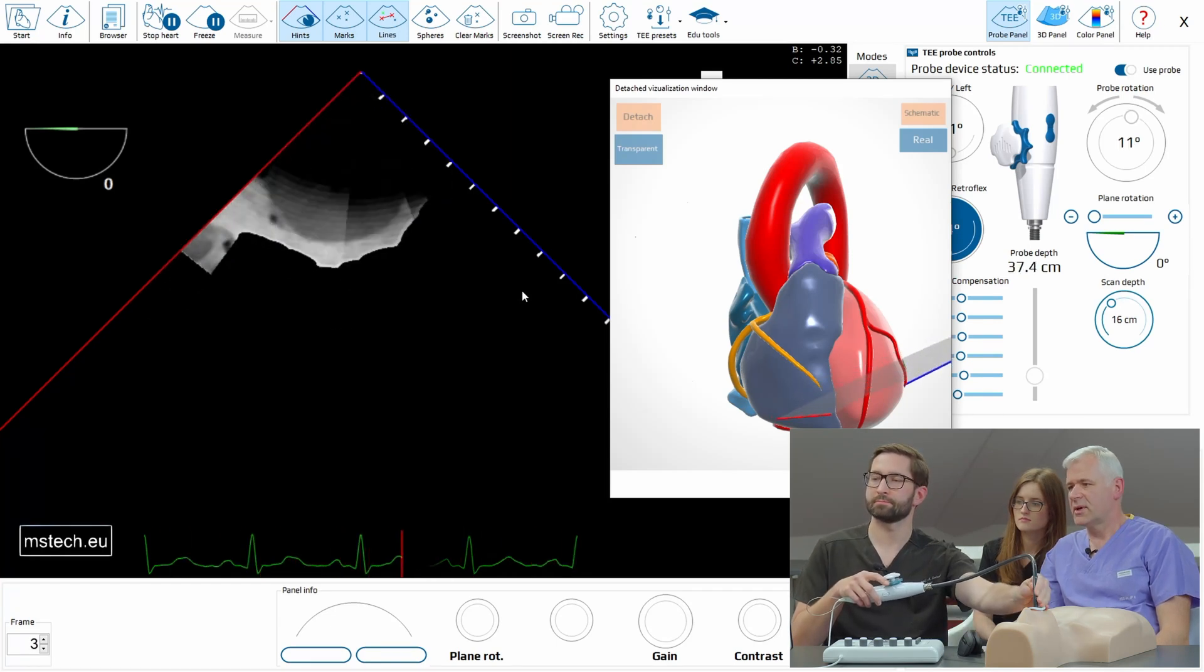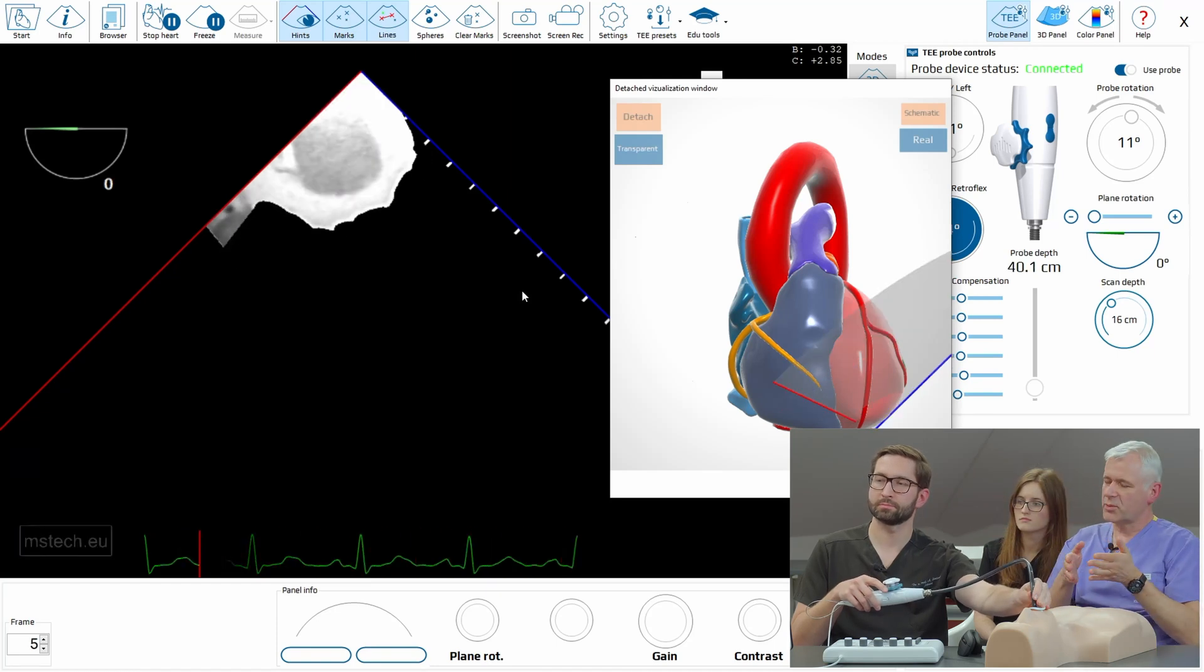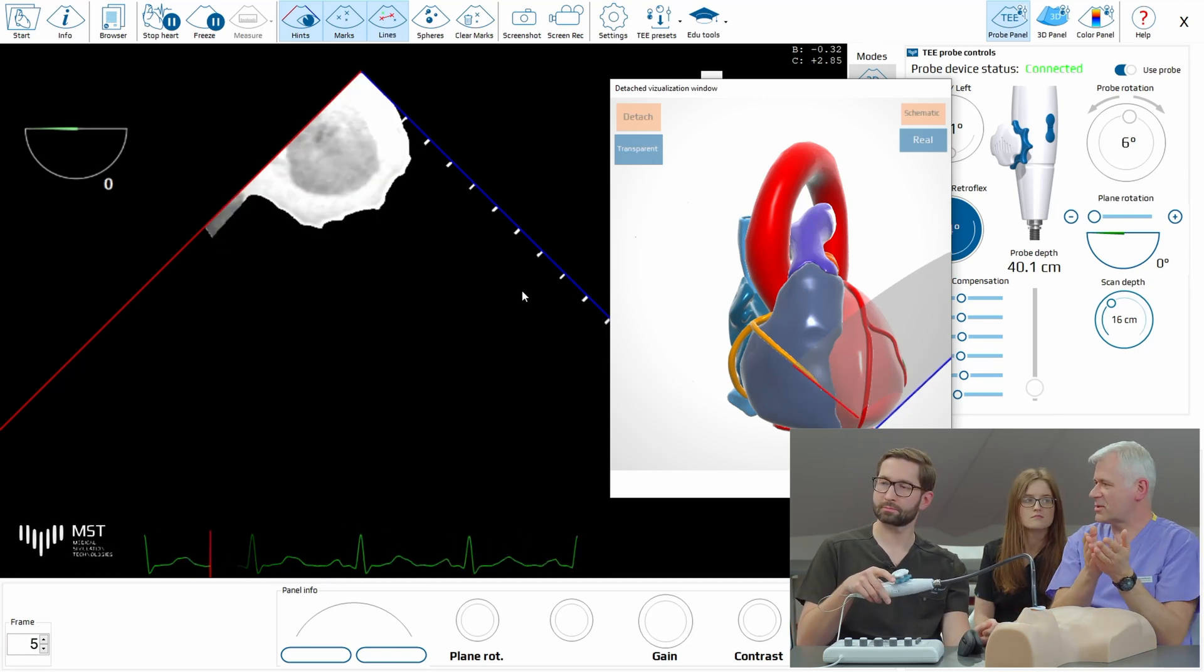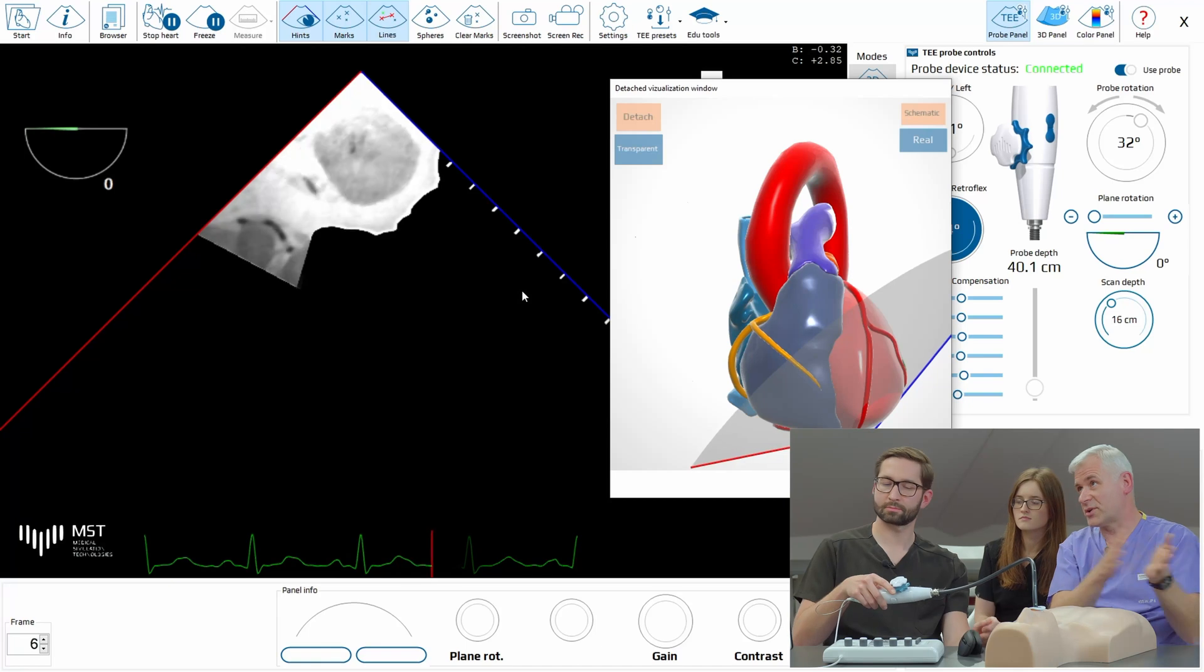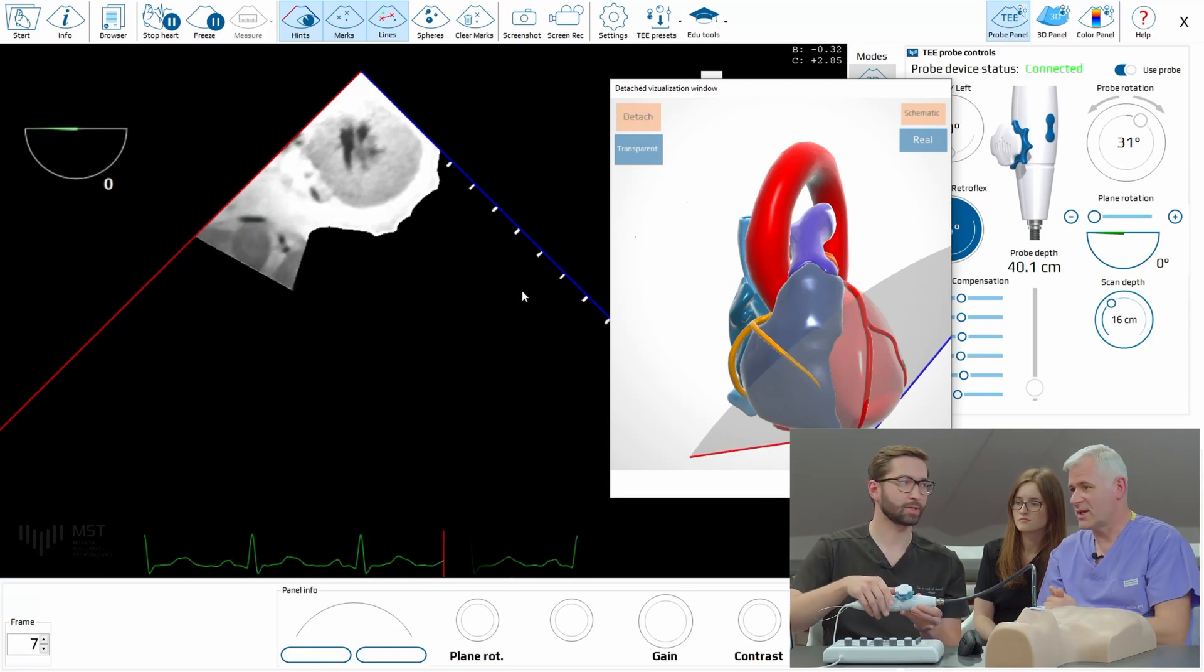Very deep. So now remember when you descend to stomach, always keep the left ventricle visible so you will have guarantee that your probe is going the right direction. If you lose the left ventricle, it means that probably the probe turns somewhere in the stomach and you will not see the apex really.